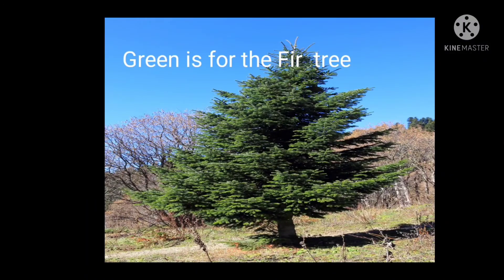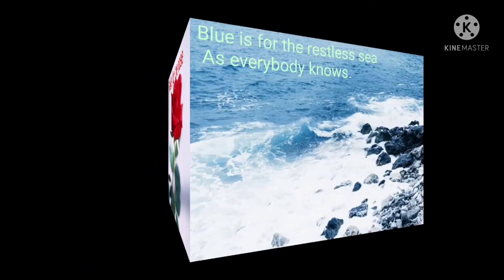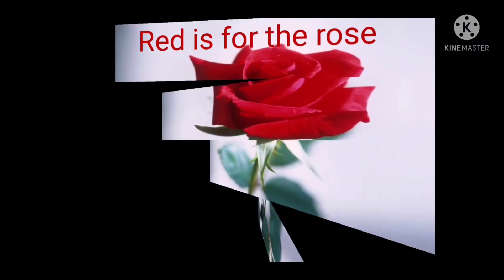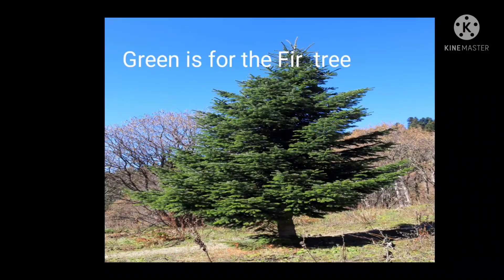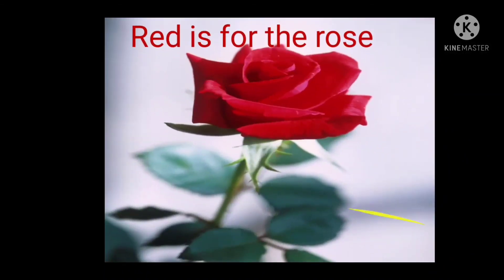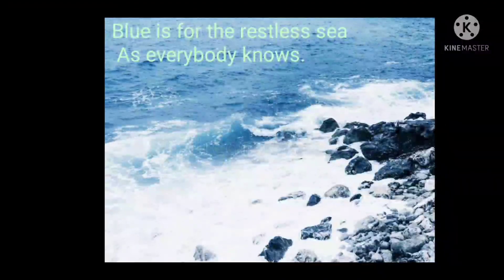Green is for the fruit tree. Red is for the rose. Blue is for the restless sea as everybody knows. We give green color to the trees, red for the roses, blue for the seas. And always its waves go forth and back — everybody knows it.